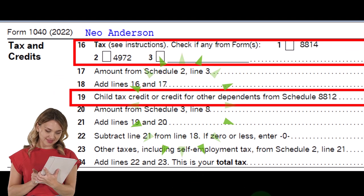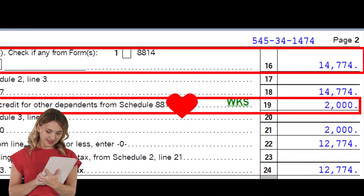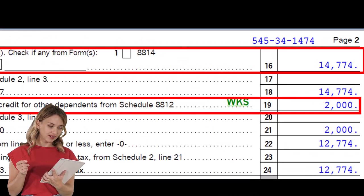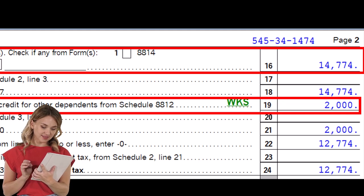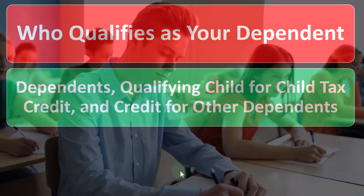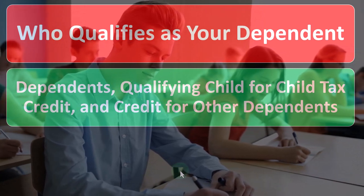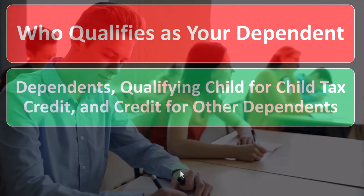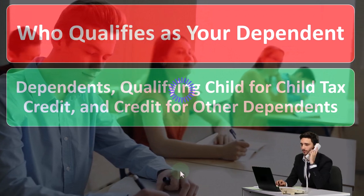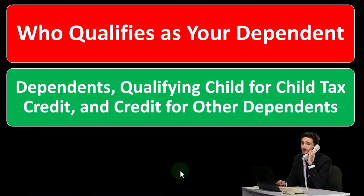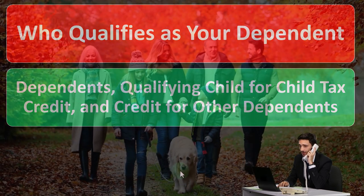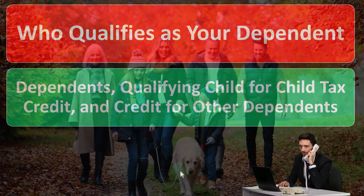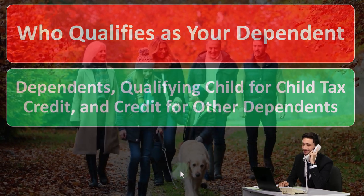It actually gets fairly complex, and it's easiest to work through in a questionnaire-type format. In practice, often you can say this is a pretty straightforward scenario, and when it's not, we can go through that formal questionnaire process. So: who qualifies as your dependent? Do they qualify for a dependent, which might change a filing status from single to head of household? Do they qualify for the dependent and give you a tax benefit of either the child tax credit or the other dependents credit?